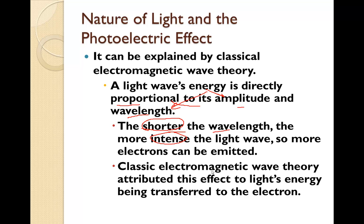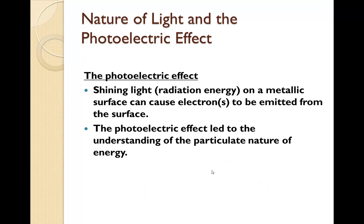Classic electromagnetic wave theory attributed this effect to the light's energy being transferred to the electrons. Shining a light, or the radiation energy, on a metallic surface can cause electrons to be emitted from the surface.